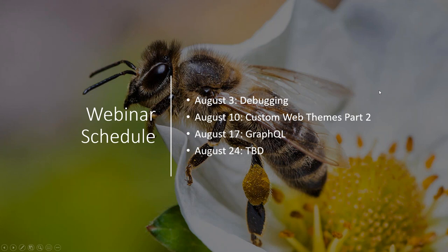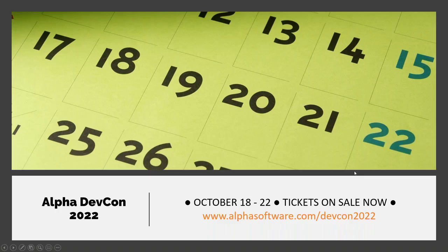As always, I'd like to do a little bit of housekeeping and remind you of things coming up. Today we're doing web themes, but next week we're going to talk about debugging XBasic specifically, and then custom web themes part two. Following that, on the 17th, Dionne is going to present GraphQL, covering some of the new stuff in the most recent release. The 24th is to be determined — either web themes part three or something else. Also, DEFCON 2022 is coming up October 18th through the 22nd — tickets are on sale now, so get your tickets. The theme is going to be data.